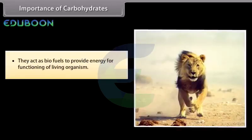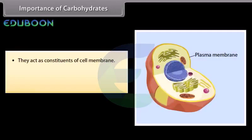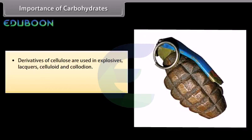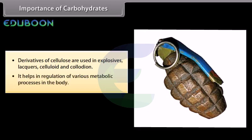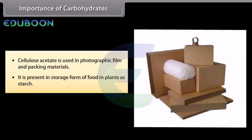The importance of carbohydrates: they act as biofuels to provide energy for functioning of living organisms. They act as constituents of cell membrane. They help in breakdown of fatty acids and preventing ketosis. Derivatives of cellulose are used in explosives, lacquers, celluloid and collodion. They help in regulation of various metabolic processes in the body. Cellulose acetate is used in photographic film and packing materials. Carbohydrates are present as the storage form of food in plants as starch.